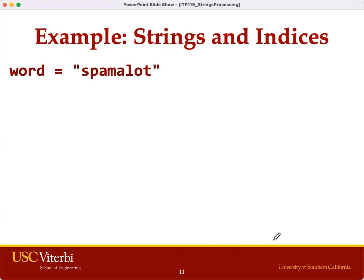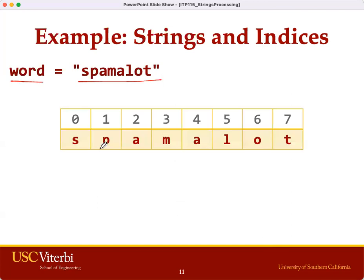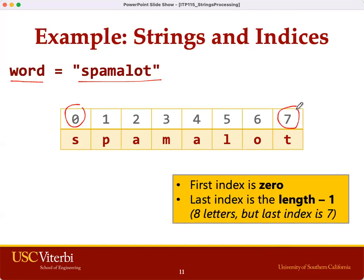Let's look at this example. We have a string variable with the value 'spamalot'. This is a string of 8 characters from index 0 to index 7. And 7 is the last valid index, which is equal to the length of the entire string — 8 characters — minus 1.